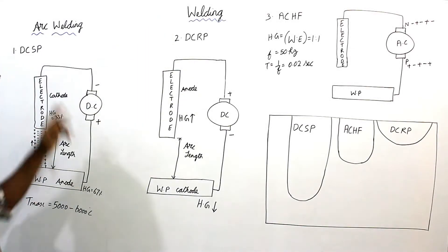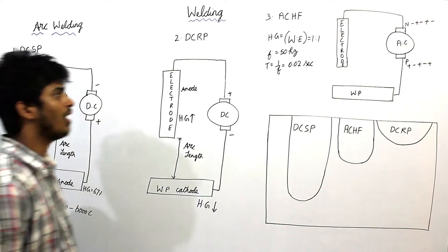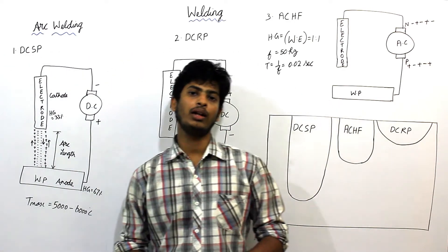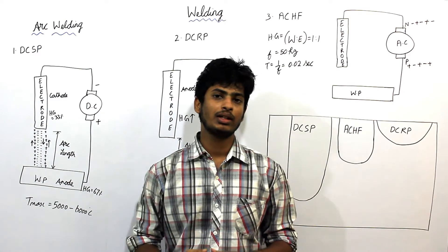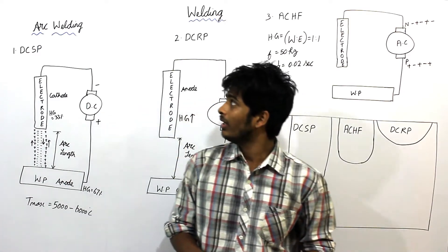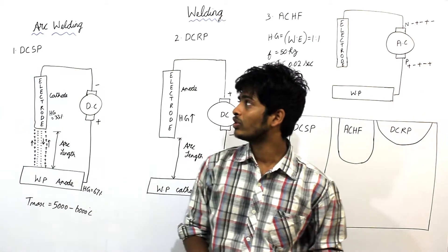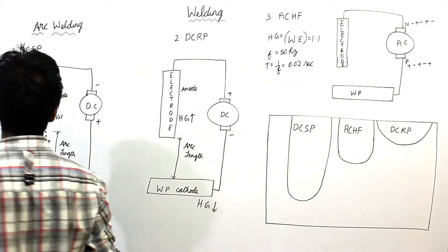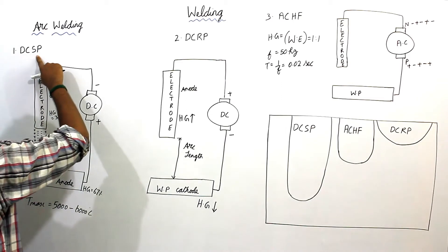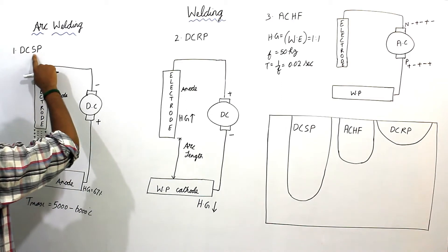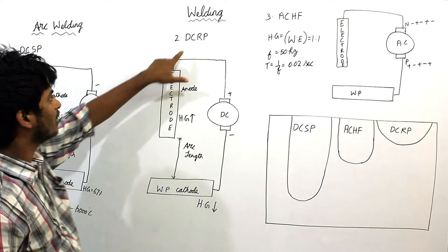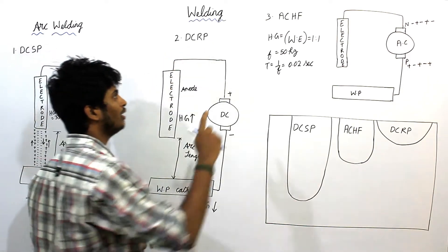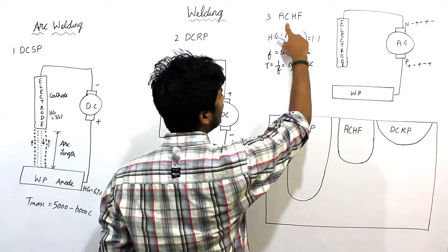Under welding process, the next topic is arc building. The heat required for melting and joining the plates is obtained by electrical arcs, and this is called arc building. Under arc building, we have three types: one is DCSP (direct current straight polarity), second is direct current reverse polarity, and third is alternating current high frequency.